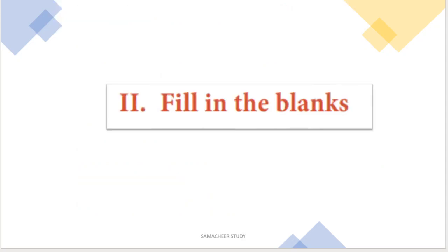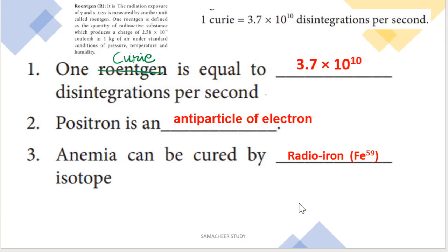Next, fill in the blanks questions. First question: 1 Rutherford is equal to how many disintegrations per second? 1 Curie is equal to 3.7 into 10 power 10 disintegrations per second. That is the correct answer.